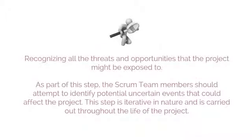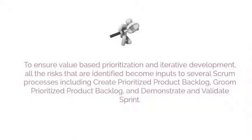Risk identification involves recognizing all the threats and opportunities that the project might be exposed to. The Scrum team members should attempt to identify potential uncertain events that could affect the project. This step is iterative in nature and is carried out throughout the life of the project. All identified risks become inputs to several Scrum processes, including Create Prioritized Product Backlog, Groom Prioritized Product Backlog, and Demonstrate and Validate Sprint.